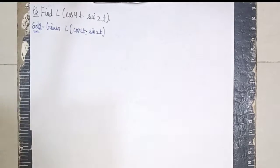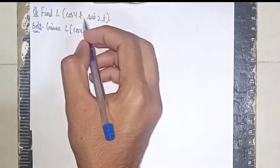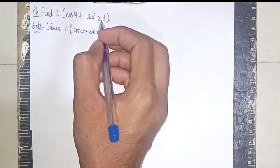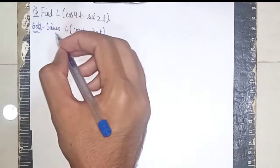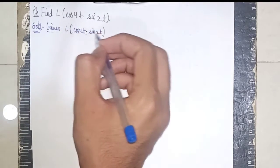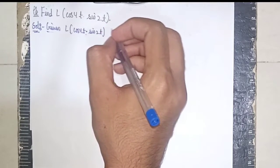Hello and welcome back to my channel. In this question, we find the Laplace transform of cos 4t times sin 2t. So first I'll write the given question, and then I'll solve it. I am using an algebra formula here.